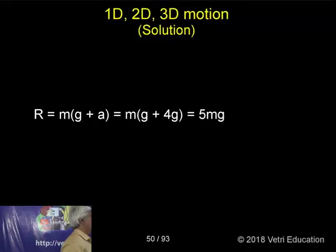Then we have to add. Because R is equal to, this one we have given in the lift. The lift moving upward, what happened? The resultant mass m into g plus a. Therefore m into g plus 4g. Therefore 5mg.